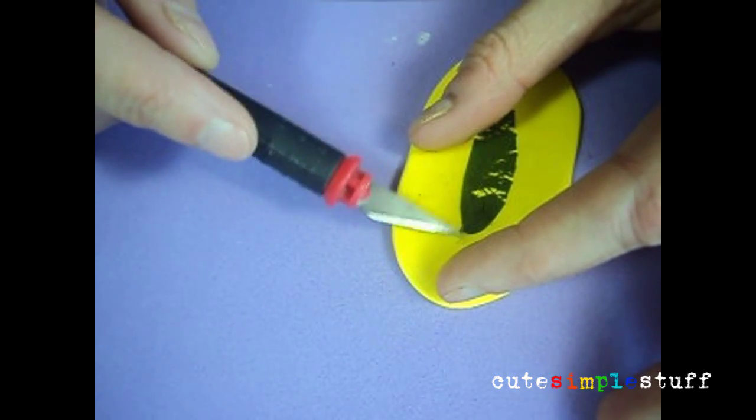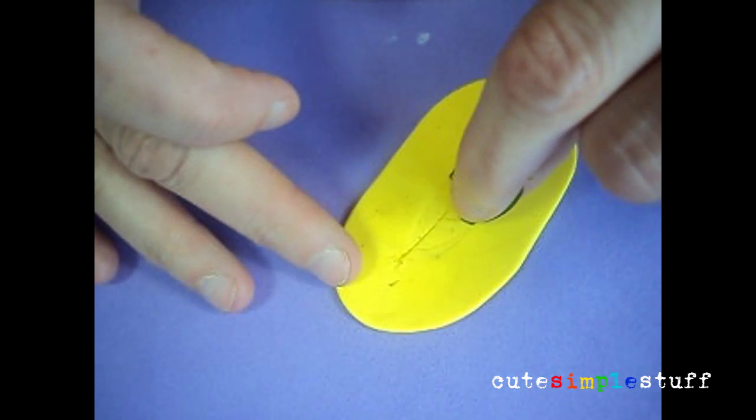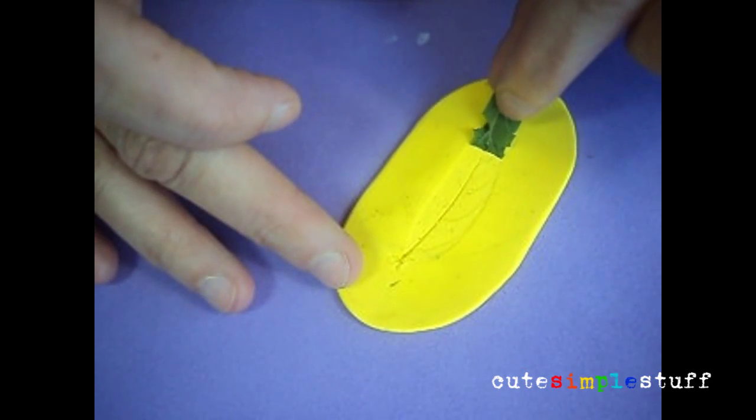And for the setting, in case you're curious, I used setting number... Then with my exacto knife, I grabbed the leaf and removed it from the piece of clay.